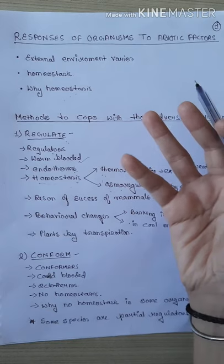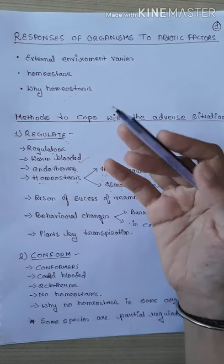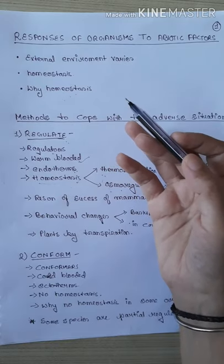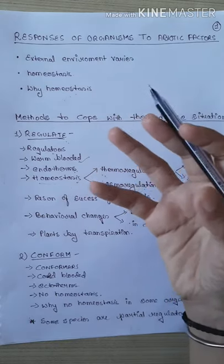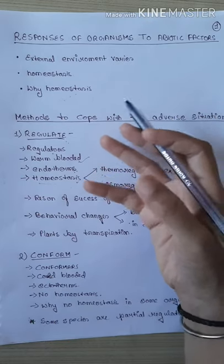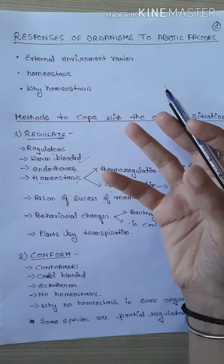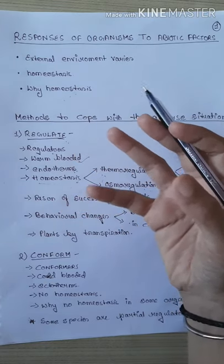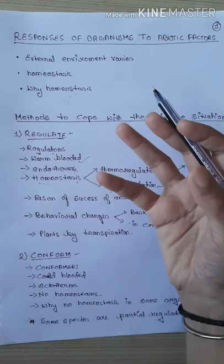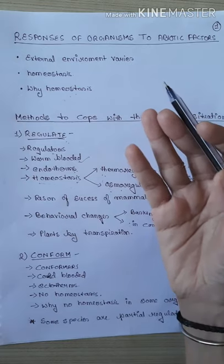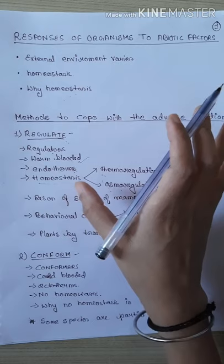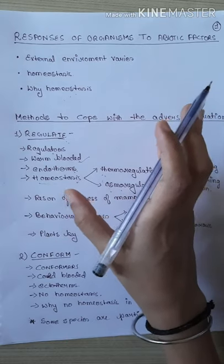Before going through the responses of organisms, there are a few points to note. Pehla point: external environment jo hota hai — means environment ka temperature, humidity — yeh sari cheezein kabhi bhi constant nahi rehti hain. Yeh aksar badavdi rehti hain. For example, ek din pehle tak barish ho rahi thi jiske wajah se temperature kaafi low tha, par aaj barish nahi hui to temperature kal ki muqaable badh gaya. External environment ke conditions kabhi constant nahi rehte.